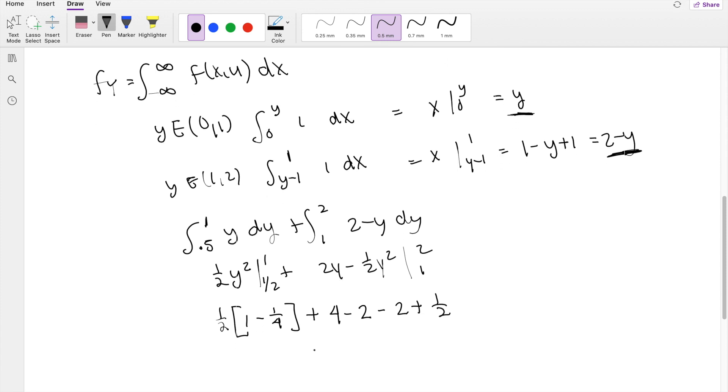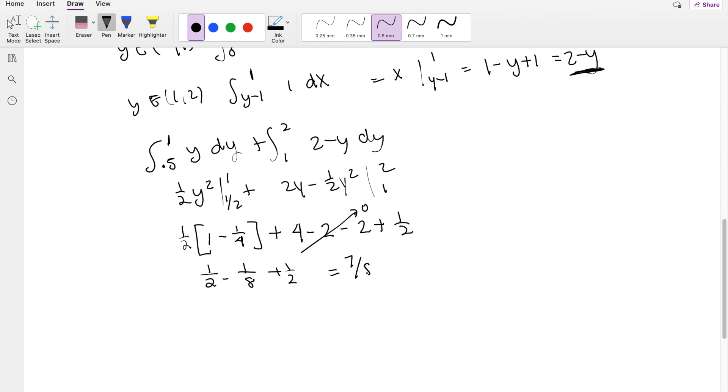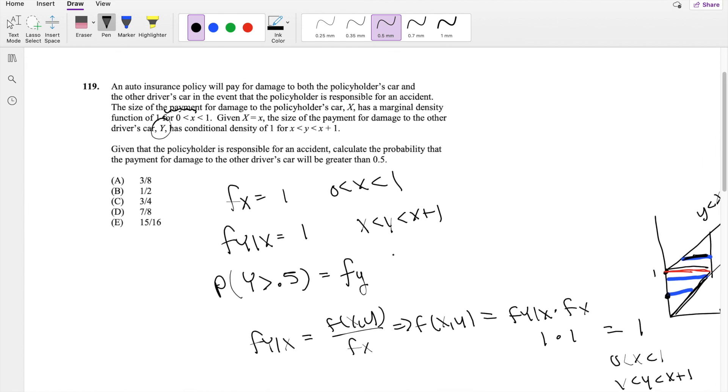Okay, plugging this in, I'm going to simplify it just a little bit more, so this all just becomes 0. Right here is 1/2 minus 1/8 plus 1/2, so this is equal to 7/8, our answer D.